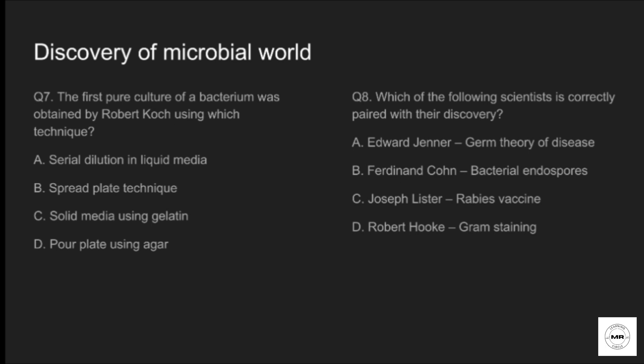Question seven: the first pure culture of a bacterium was obtained by Robert Koch using which technique? Option A: serial dilution in liquid media. Option B: spread plate technique. Option C: solid media using gelatin. Option D: pour plate using agar. The correct answer is option C, solid media using gelatin. Koch used gelatin solid medium for isolation, and later gelatin was replaced by agar because gelatin had melting and digestion issues.